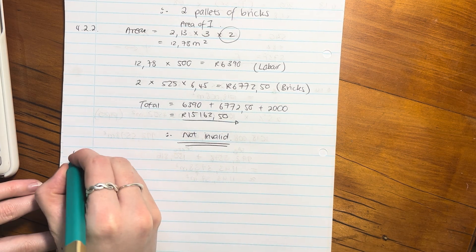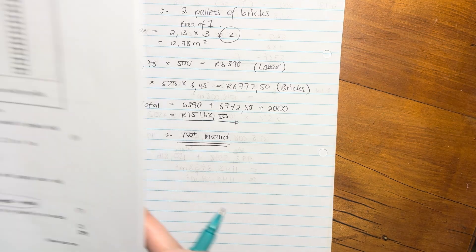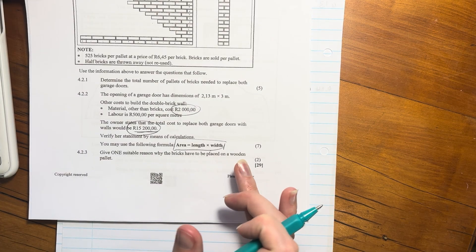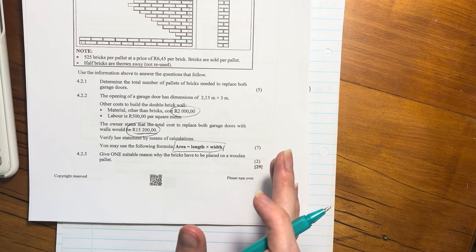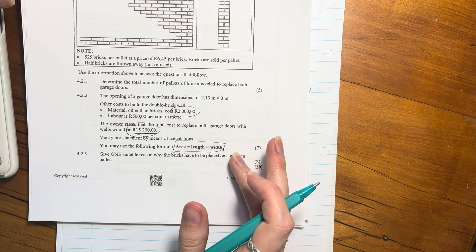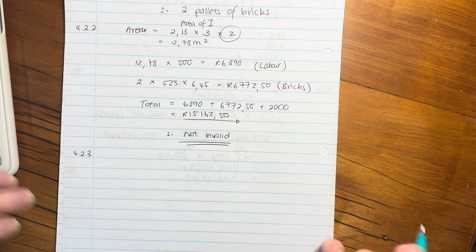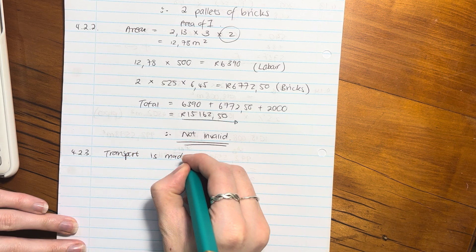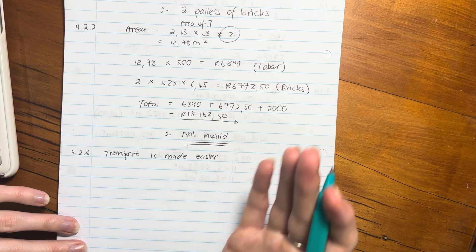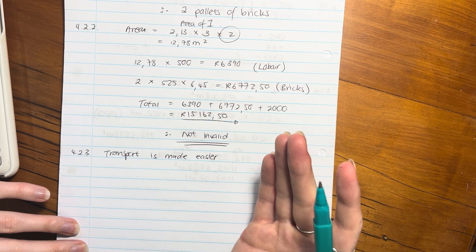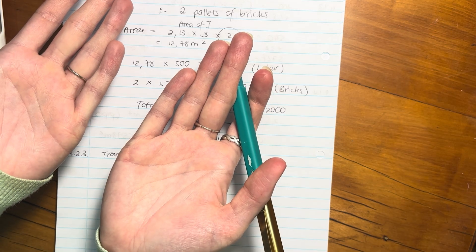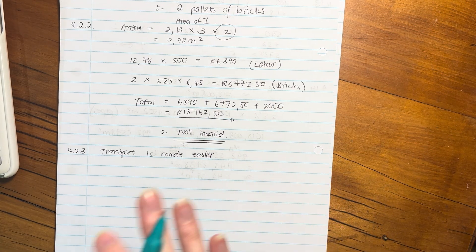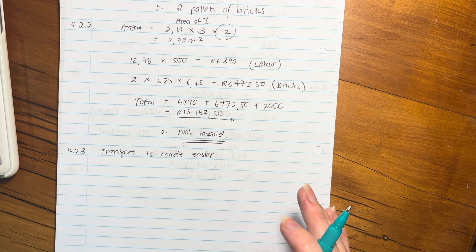We have one more question. Give one suitable reason why the bricks have to be placed on a wooden pallet. This is one of these common sense questions. The easiest thing to say is it makes transport easier. But you could say things like it protects the bricks from damage, it's easier to lift because the forklift comes underneath into the pallets. Just give one logical reason and move on to question five.